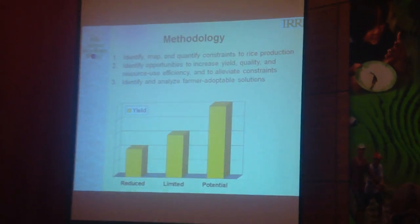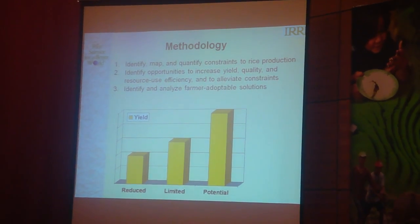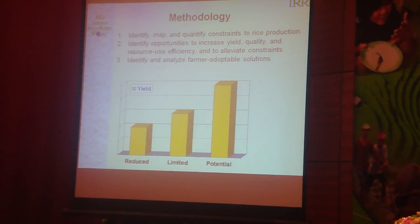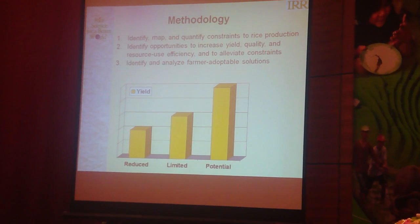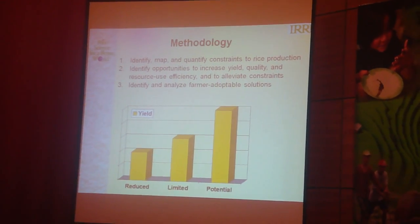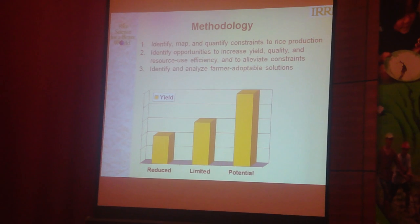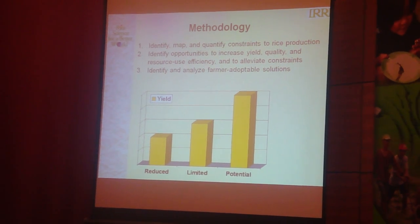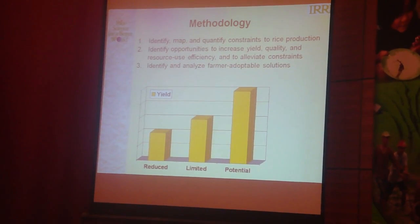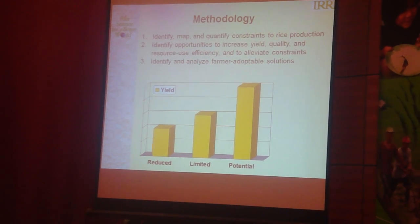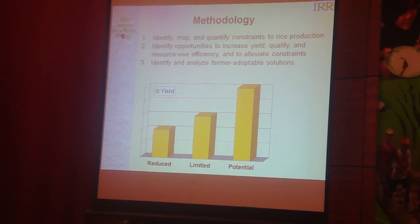This is our methodological framework, and it's a different look at what David presented. Potential yield is the highest yield — it means there are no biotic or abiotic constraints limiting yield. It's really the expression of the genetic potential of a certain variety in terms of tonnes per hectare.